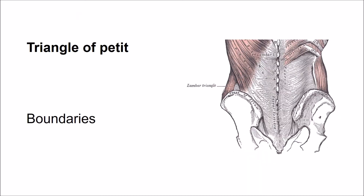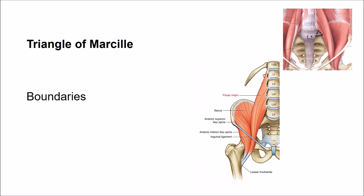The Triangle of Petit is a triangular depression above the iliac crest, bounded in front by the posterior border of the external oblique muscle, posteriorly by the anterior border of the latissimus dorsi muscle. The base is formed by the iliac crest and the apex by the joining of fibers of the external oblique and latissimus dorsi muscles. The floor of the triangle is formed by the internal oblique muscle. This is a potentially weak area of the abdominal wall through which herniation may occur.